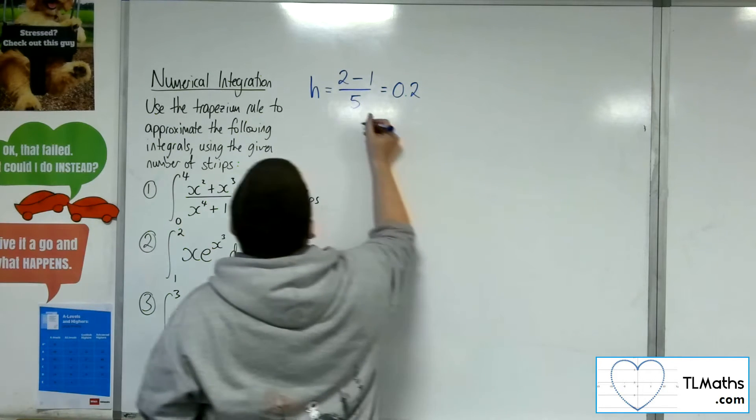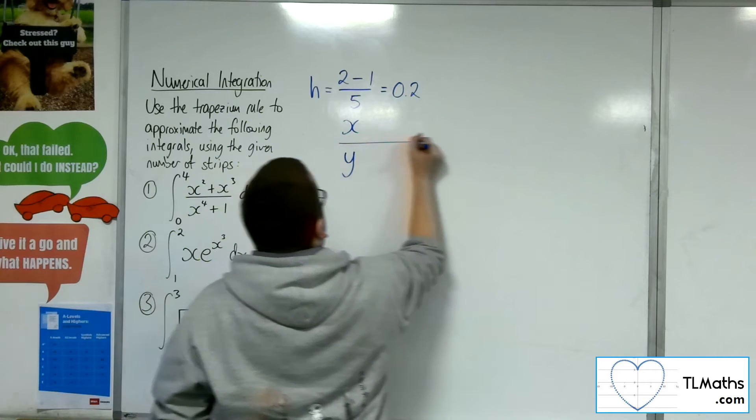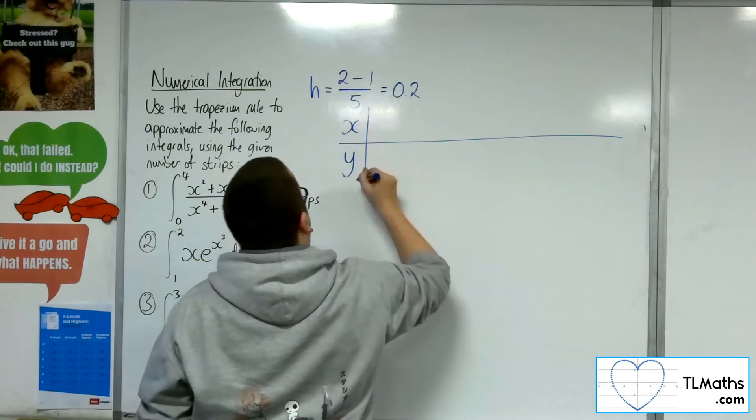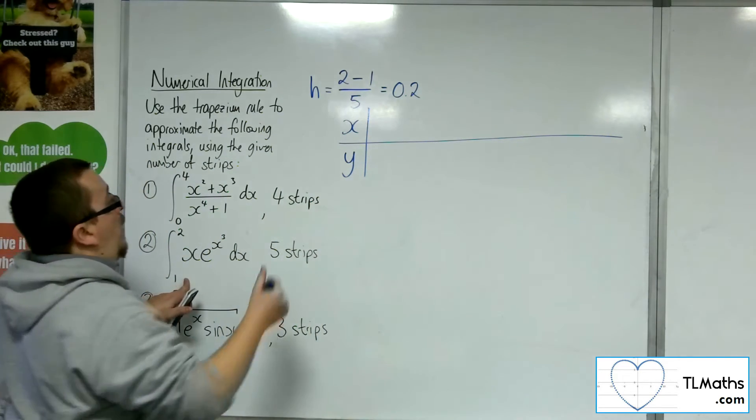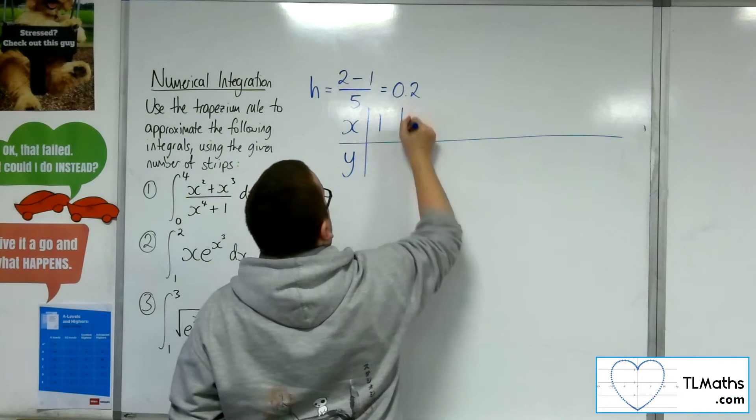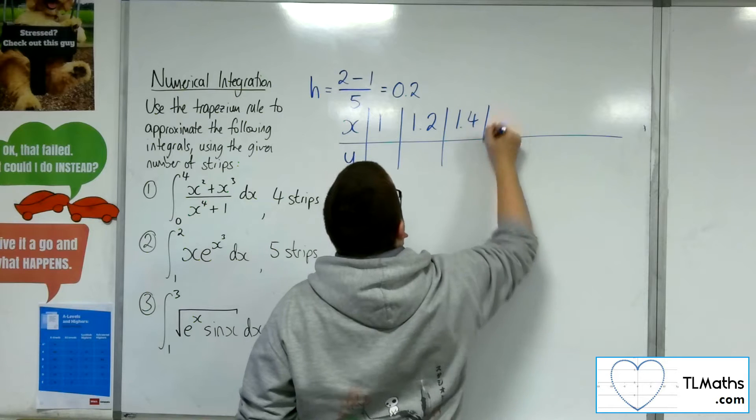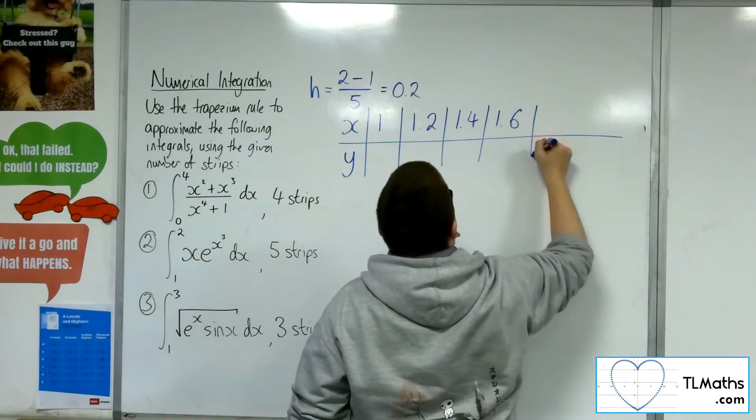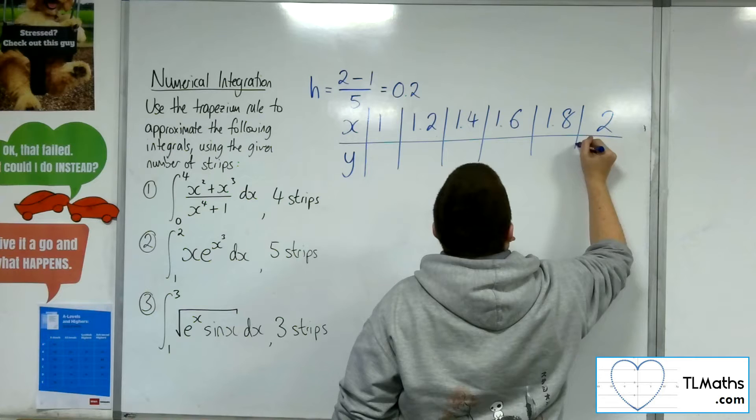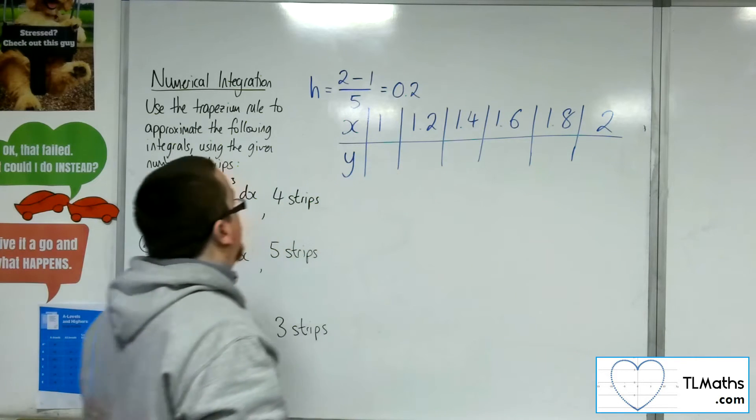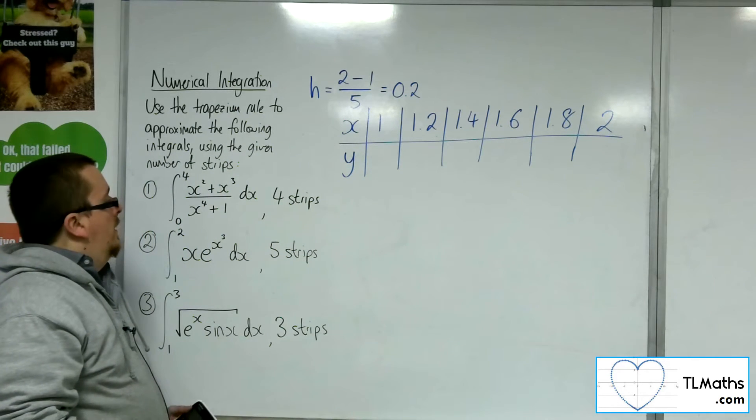Table of results. X's and Y's. So we're starting at 1 and going up in 0.2s. So 1.2, 1.4, 1.6, 1.8, and then finally 2.